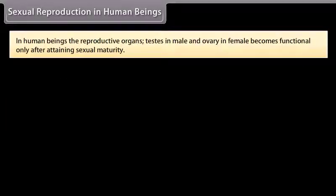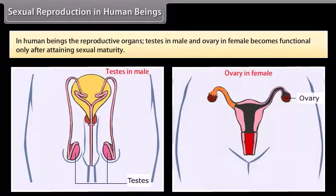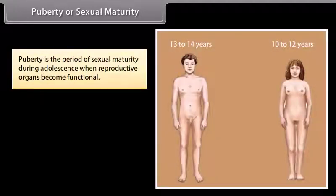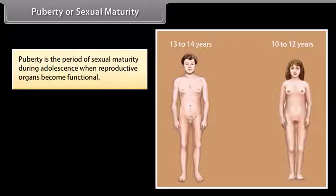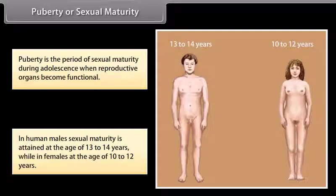In human beings, the reproductive organs — testes in males and ovaries in females — become functional only after attaining sexual maturity. Puberty is the period of sexual maturity during adolescence when reproductive organs become functional. In human males, sexual maturity is attained at the age of 13 to 14 years, while in females at the age of 10 to 12 years.